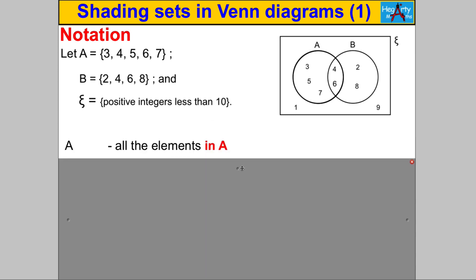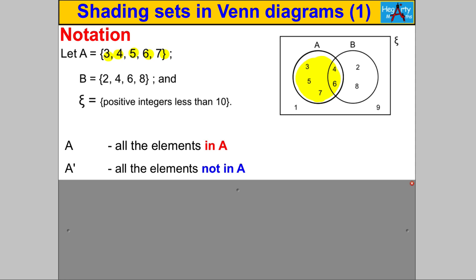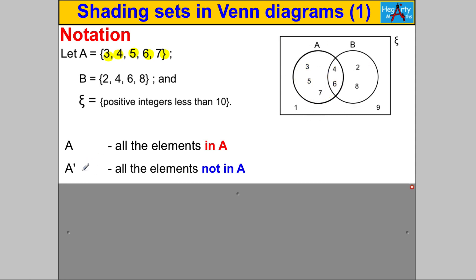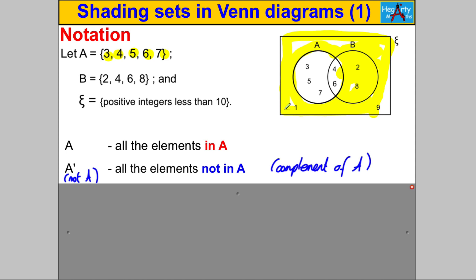The first piece of notation: if you see A written, it means all the elements in A. So if you were just given the Venn diagram, you would shade everything inside circle A. Clearly the elements in A are 3, 4, 5, 6, and 7. Next, you'll see A dash — that means 'not A,' or the complement of A. It means all the elements that are not in A, so everything inside the rectangle that is outside the circle. The elements there are 1, 2, 8, and 9.